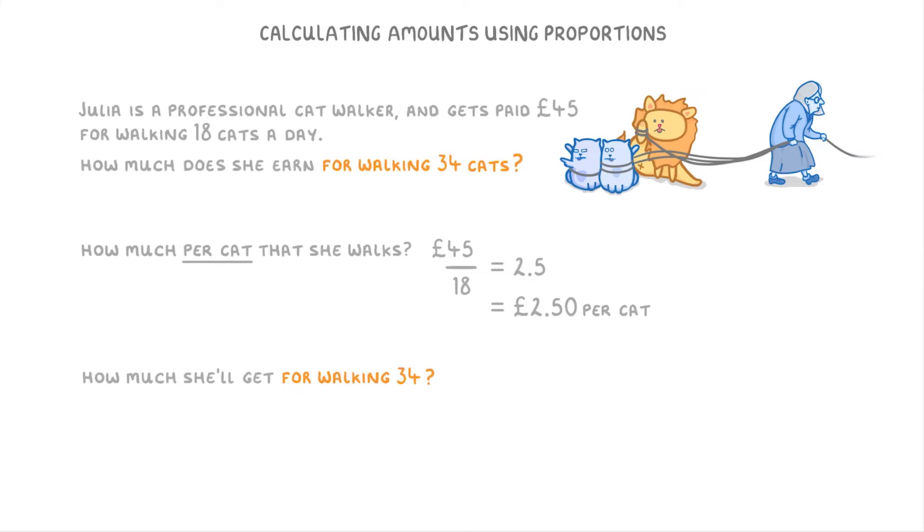And so to find out how much she'll get paid for walking 34 cats, we just multiply 34 by £2.50, to find that she'd get £85.